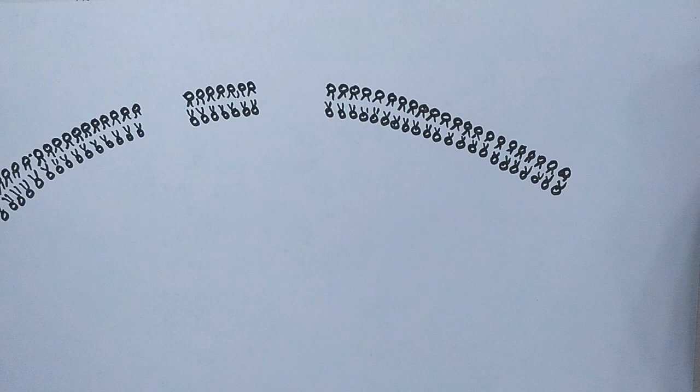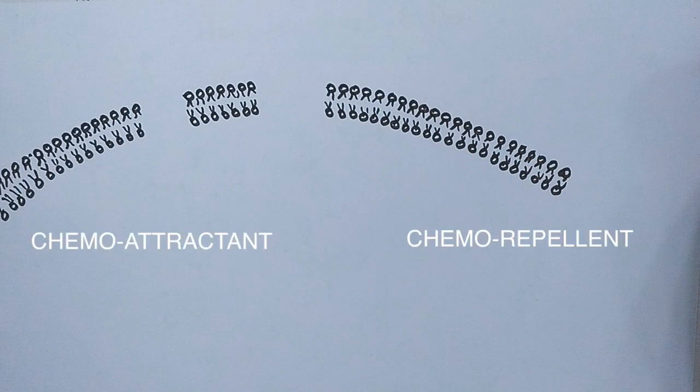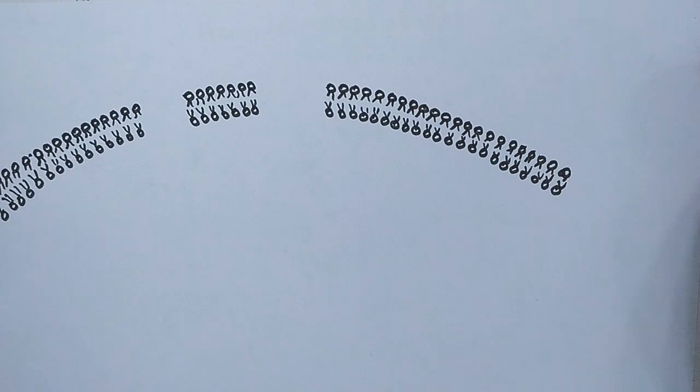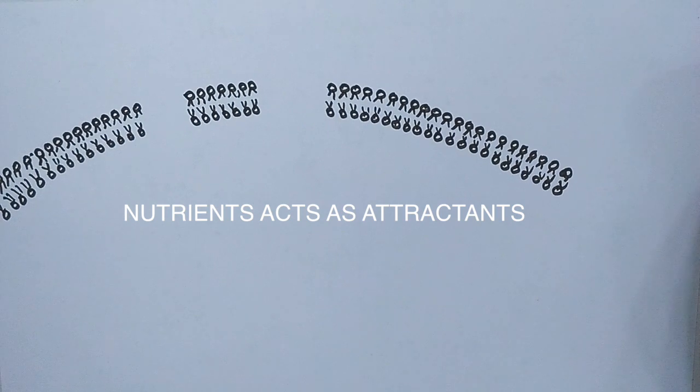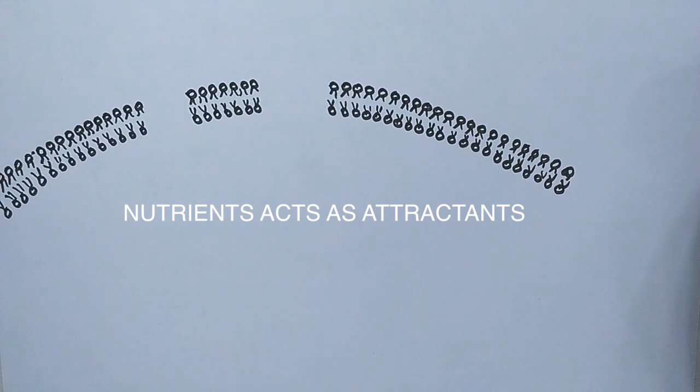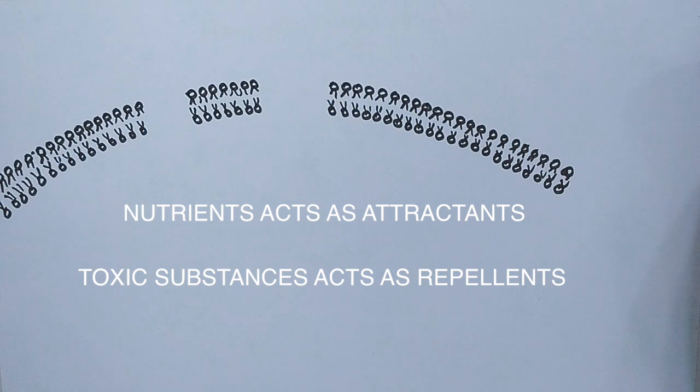Now clearing the basics first, we know there are two kinds of substances which will impact the movement of bacteria: one is the chemoattractant, the other being the chemorepellent. Chemoattractants are the ones which are beneficial for bacteria like nutrients, so bacteria will go towards it, while when there is any toxic substance, at that time it will act as a repellent for bacteria since bacteria will move away from it.